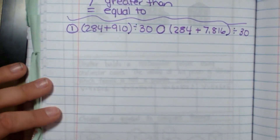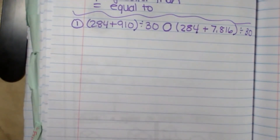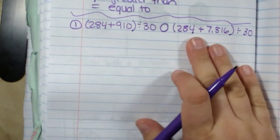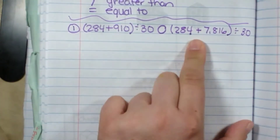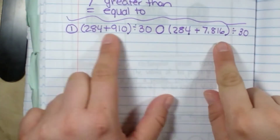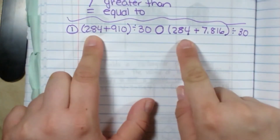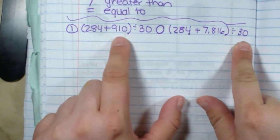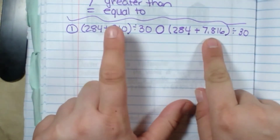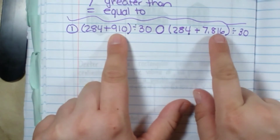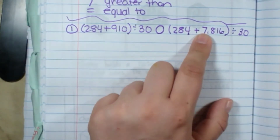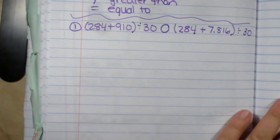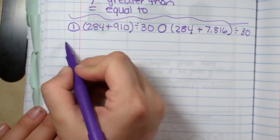Which one's bigger? I can make a guess that this one will be bigger before I even solve it, because they both start with 284 and they're both going to be divided by 30. But this one only adds 910, and that one adds almost 8,000. But we are going to solve this together.